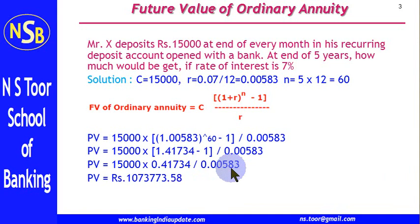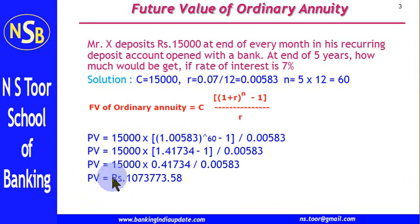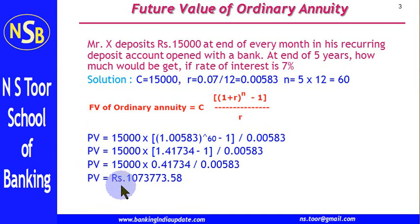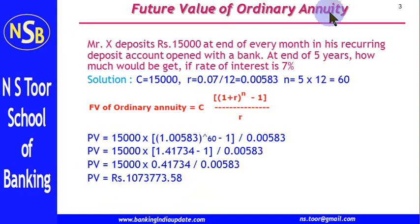We can now simplify further and calculate the future value. Note that this should be future value, not present value — so FV represents the maturity value. That is how we calculate the future value of ordinary annuity.